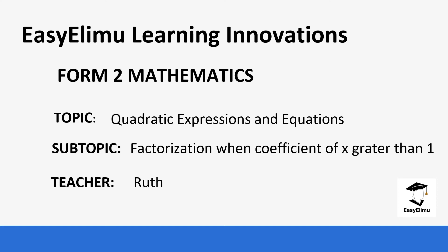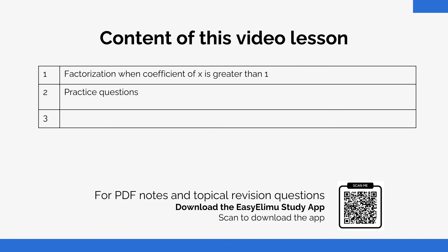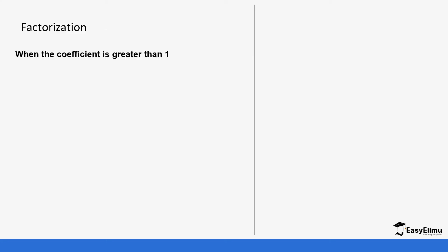Today we are going to factorize when the coefficient of x² is greater than one. In our previous lesson we looked at factorization when the coefficient of x² is one. When it comes to factorization when the coefficient of x² is greater than one, we still use the same formula, but the value of a is going to be different.